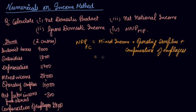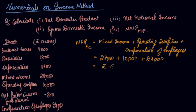So your mixed income is given as 28,000, plus operating surplus is 10,000, and compensation of employees is 24,000. So we get Rs. 62,000. This is your NDP at FC.